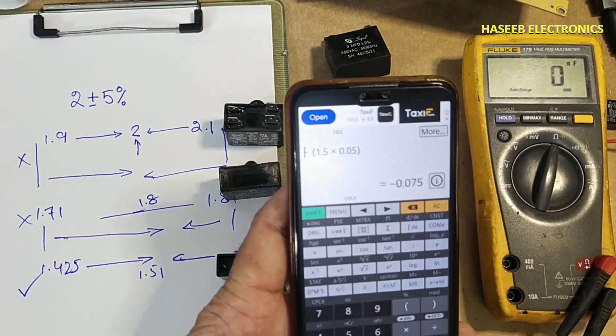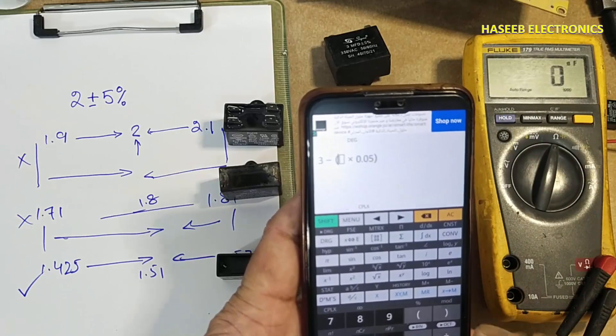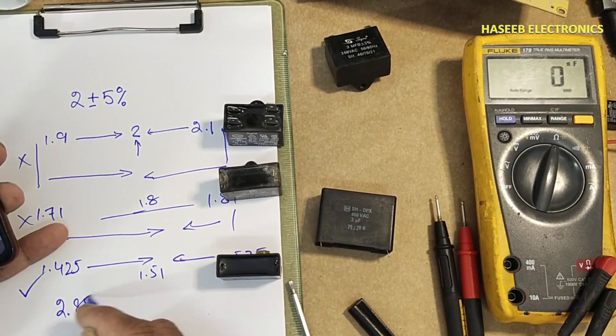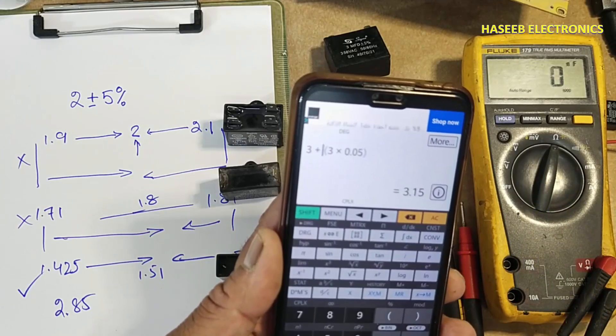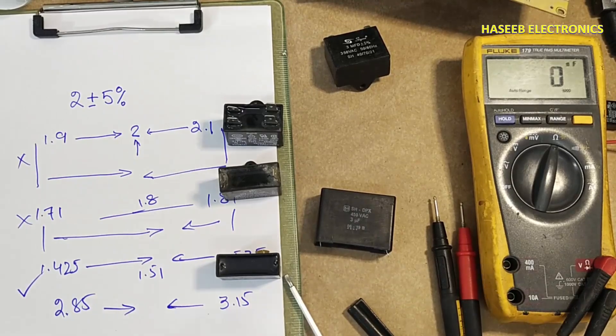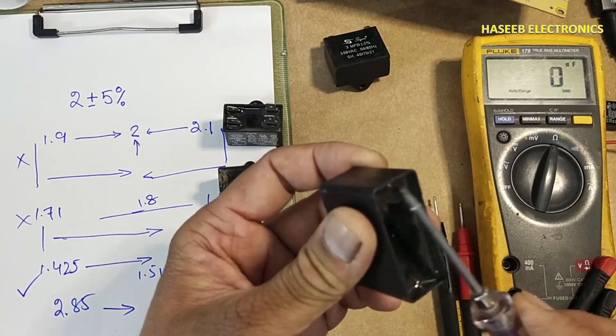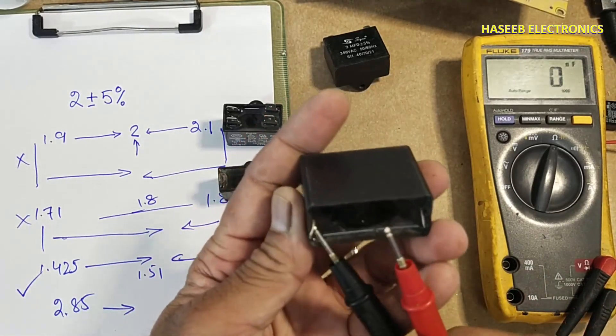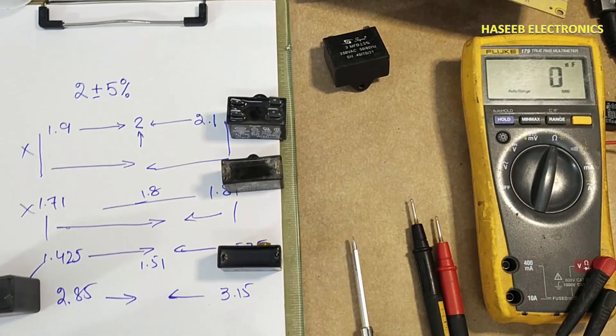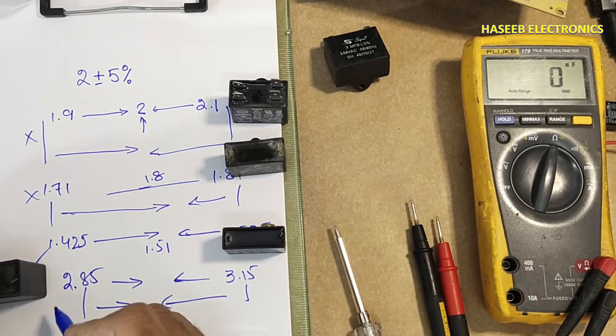So it is over the future, minus 3 percent: 2.85. Plus it is 3.15. 2.94. The value is in between this window, so this capacitor is good.